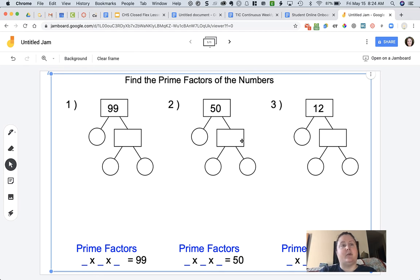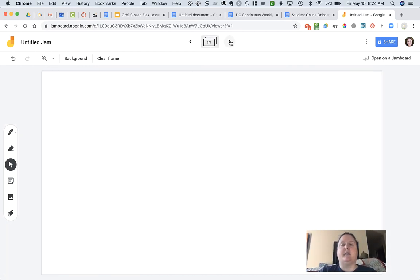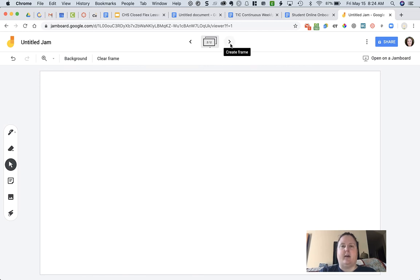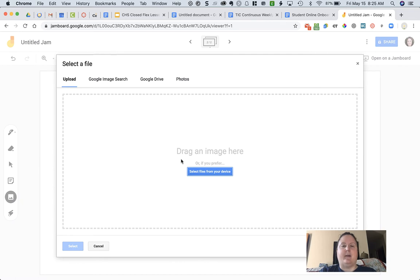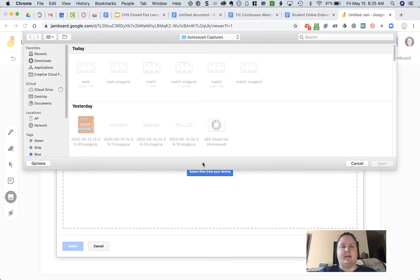Now I might have multiple pages or multiple problems that I want to do as part of my video. I'm going to click over here at the top where you can see your different frames which are basically different pages. I'm going to click on the arrow to go to my next frame and add another image.